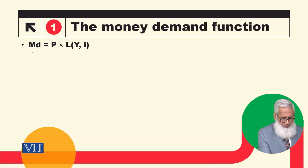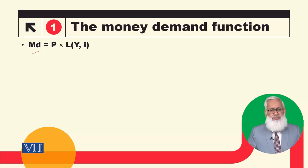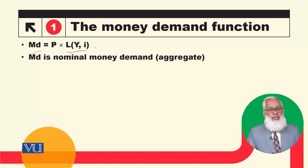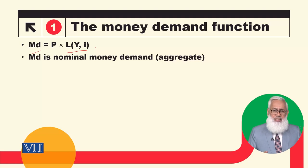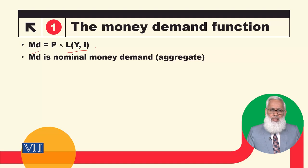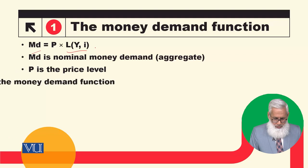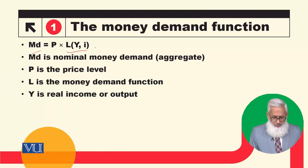So MD — Money Demand — on the left hand side is equal to P times L, which is a function of Y and I. P is the Price Level. MD is the Nominal Money Demand. We have studied that price has a direct and proportional relationship with money demand. P is multiplied with it, and L is the money demand function, so it depends on two variables.